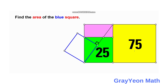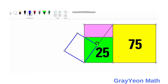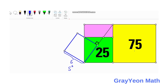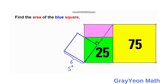Since we are interested in the area of the blue square, we can find S — the side of the blue square. If we let this side be S, then we can find S squared, which is the area. Our strategy here is to find the two triangles that are related to the side of the blue square.